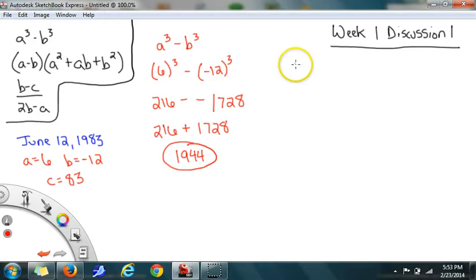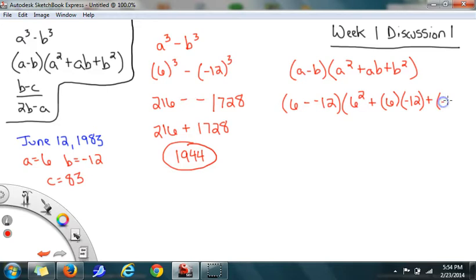I'll move on to the second expression, which is A minus B times A squared plus AB plus B squared. And again, I'm going to substitute 6 in for the variable A and negative 12 in for the variable B. So this then becomes 6 minus negative 12. Again, I'm going to have a double negative there because my B value is negative and subtraction was already part of the rule. And then here I'll replace A with 6, so this will become 6 squared plus 6 times negative 12 plus B squared, so negative 12 squared.